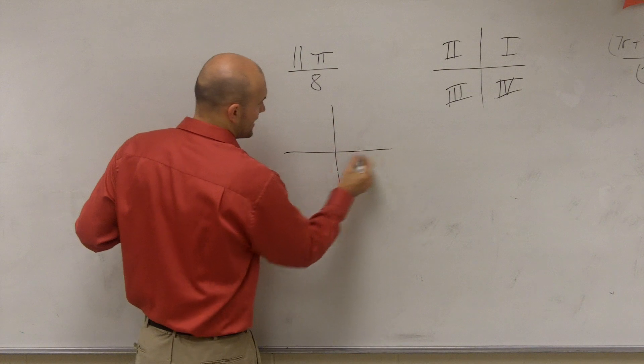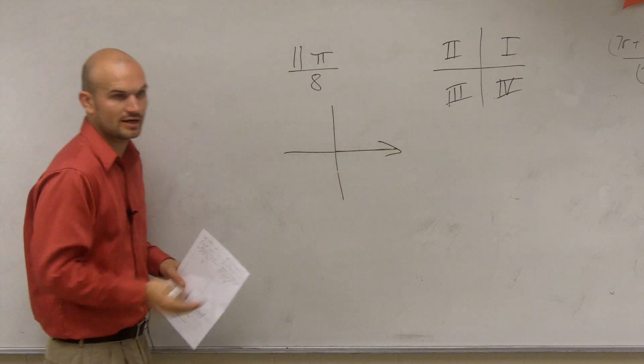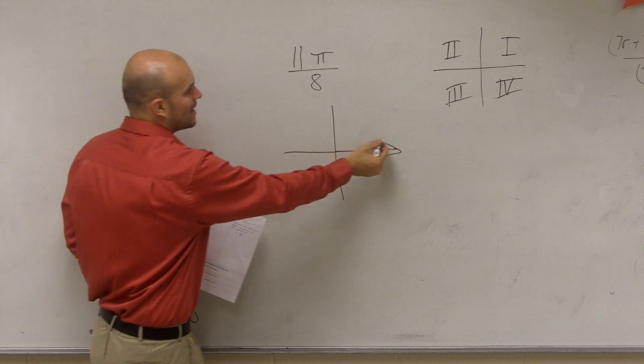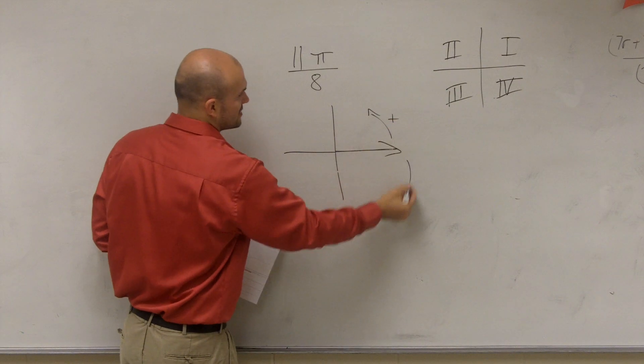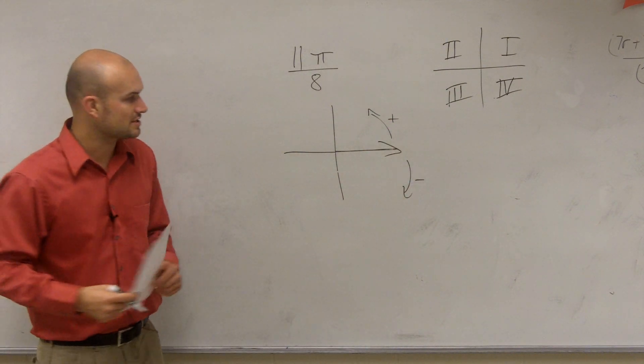Now remember, when we're describing an angle, we always start with our initial side right here and we're going to rotate it around this way. It would be in the positive direction. And if we go clockwise, it's going to be in the negative direction.